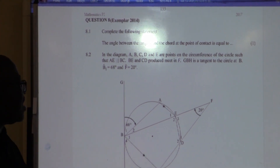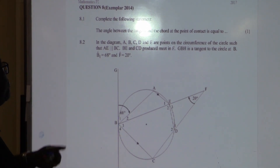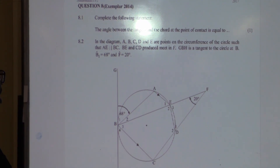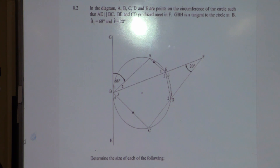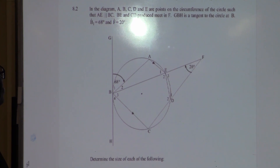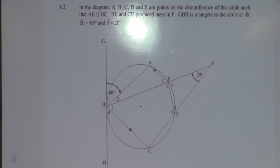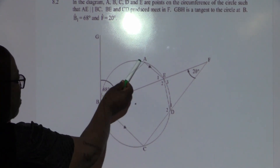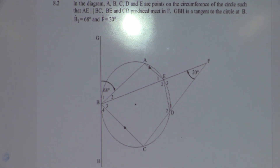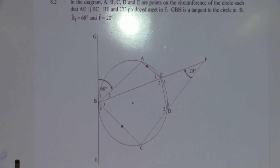And you can be able to see it in the diagram. This is the tangent and this is the chord. In the diagram, A, B, C, D, and E are points on the circumference such that AE is parallel to BC. That becomes important. I see parallel lines. I don't see a triangle, so it's not the theorem that says a line drawn parallel to one side of a triangle.